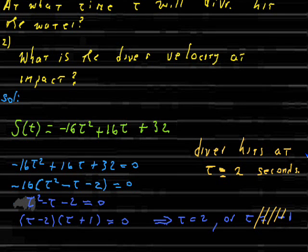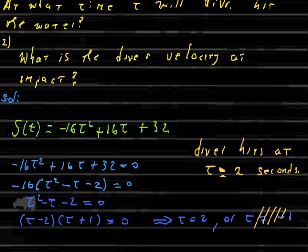Now the next question is: what is the velocity in feet per second when the diver hits the water? We know he hits at t equals 2 seconds. To answer the second question, we know how to differentiate, and that's exactly what we're going to do.